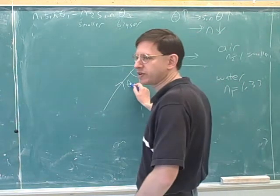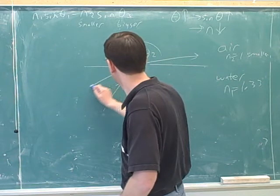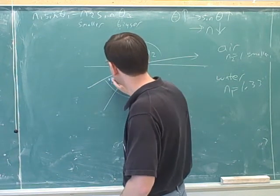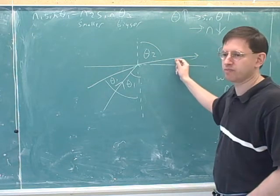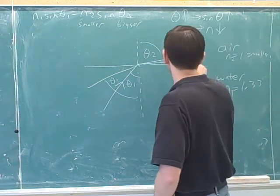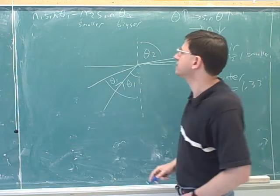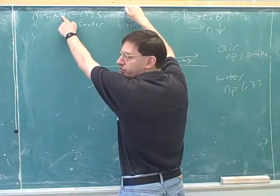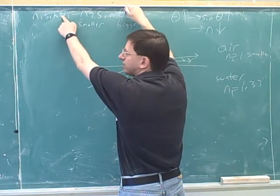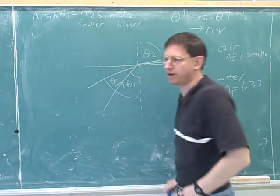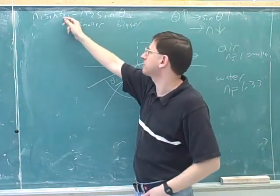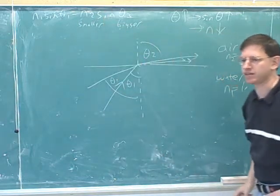Now, what would happen then if I increase theta 1 to here? What's going to happen to this right? This is going to bend even more, to say, like here, right? The bigger, you can see there's a direct relationship between theta 1 and theta 2 from Snell's law. The bigger you make theta 1 on the left, the bigger you have to make theta 2 on the right. If the left-hand side of the equation is getting bigger, the right-hand side of the equation has to get bigger.